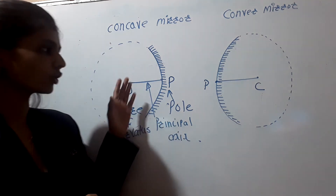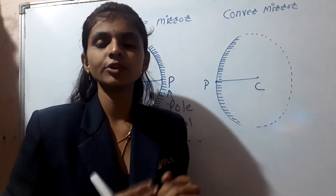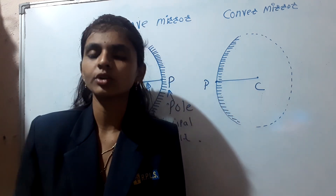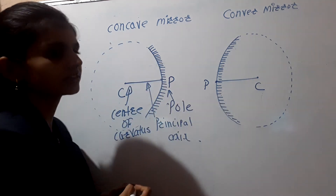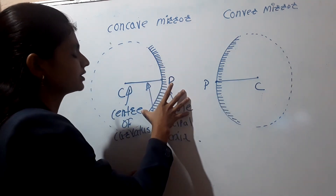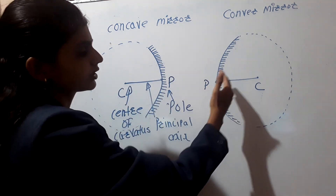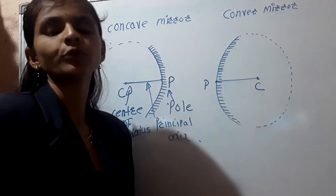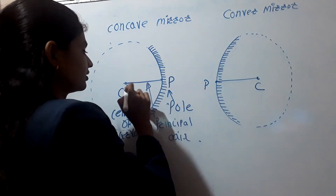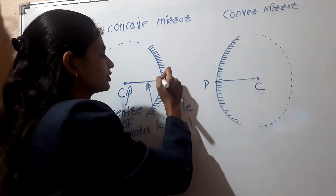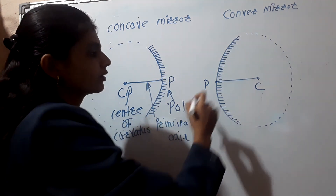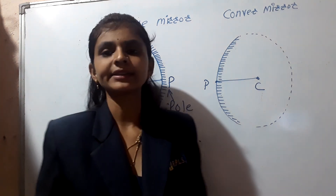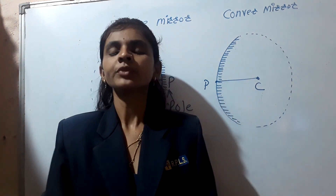The radius of the convex mirror and the concave mirror is denoted by R. In the concave mirror the reflecting surface is inward, towards the center, and in the convex mirror it is outward, opposite to the center. The center point is known as the center of curvature, the point at the center of the surface is known as the pole, and the line CP is known as the principal axis.